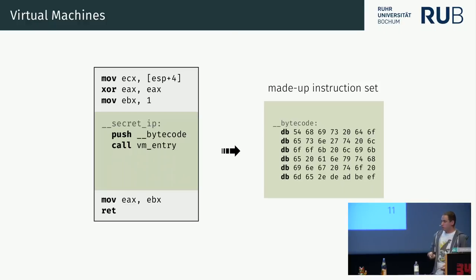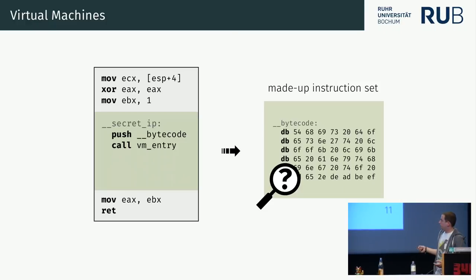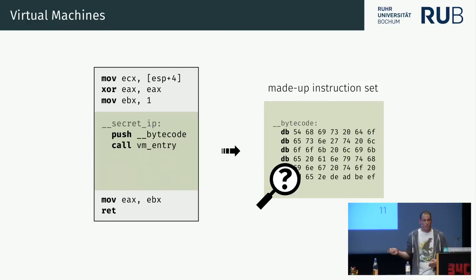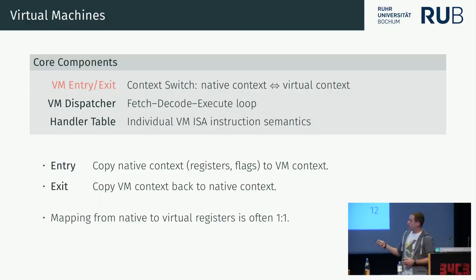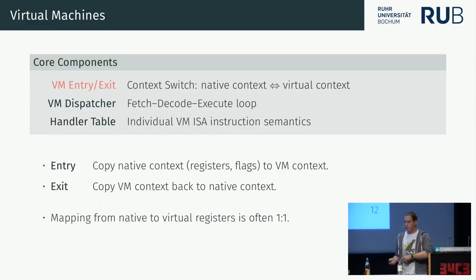The native code is replaced by a call to a virtual machine — also known as an interpreter — which is essentially a CPU in software that runs the imaginary architecture. Common tools like IDA can no longer analyze this code because they don't know about our made-up architecture. We need to ensure the transition from native code to virtual instructions goes seamlessly. The core VM components are: VM entry and exit, which perform the context switch between native and virtual contexts.